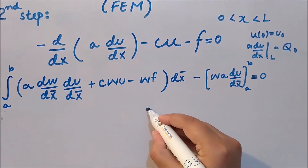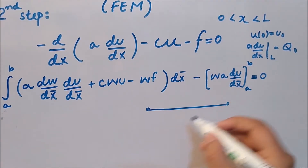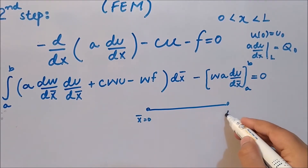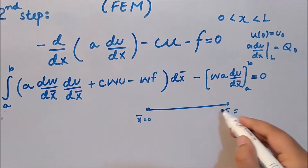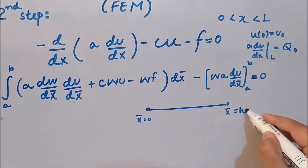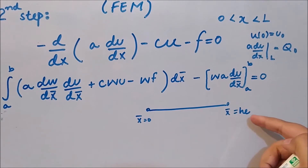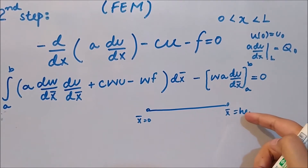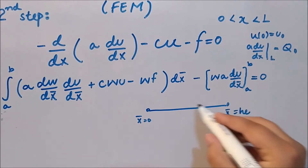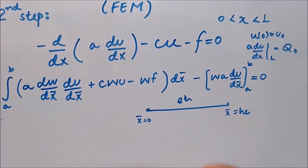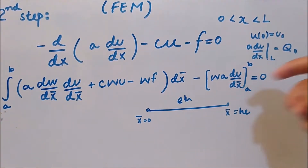When we have a rod in the local coordinate system, x-bar is zero at one end and x-bar equals the length of that element at the other end. The length of an element is h_e, where the subscript e represents that this is the length of the e-th element. That is why a would be zero and b would be the length of the element.